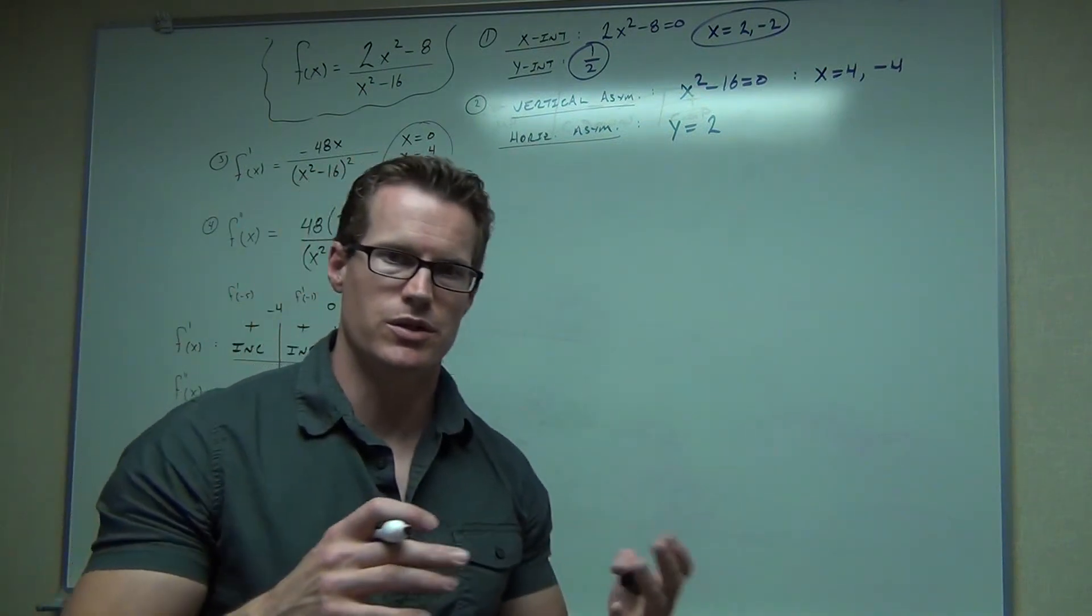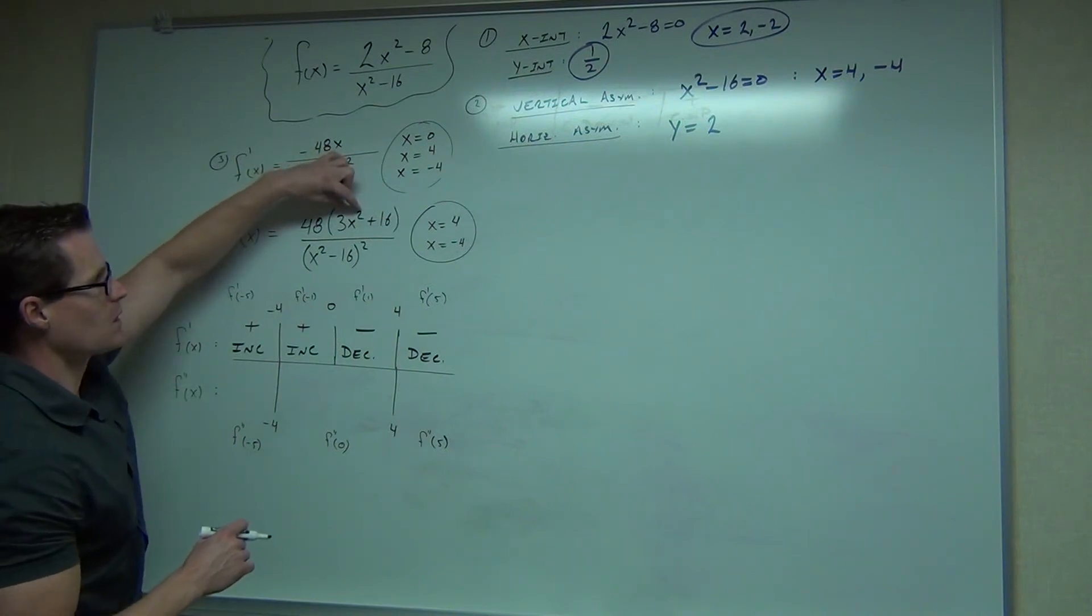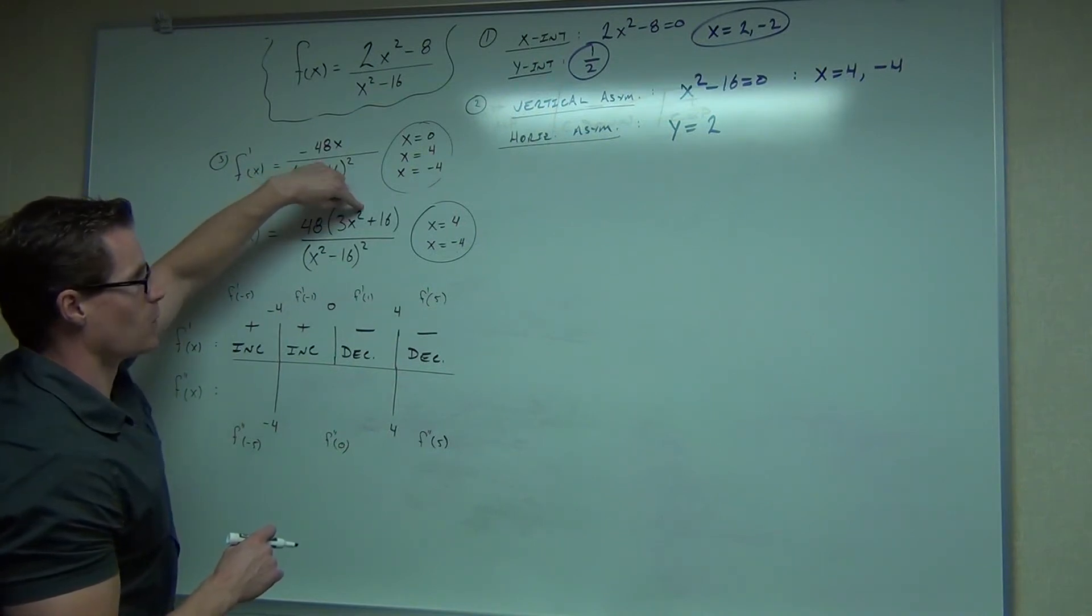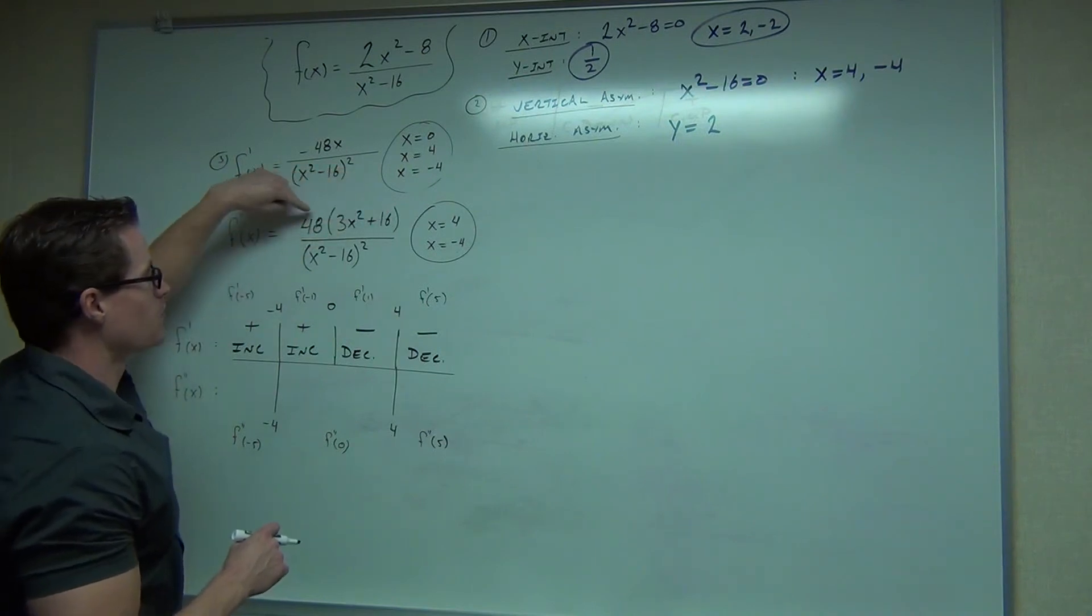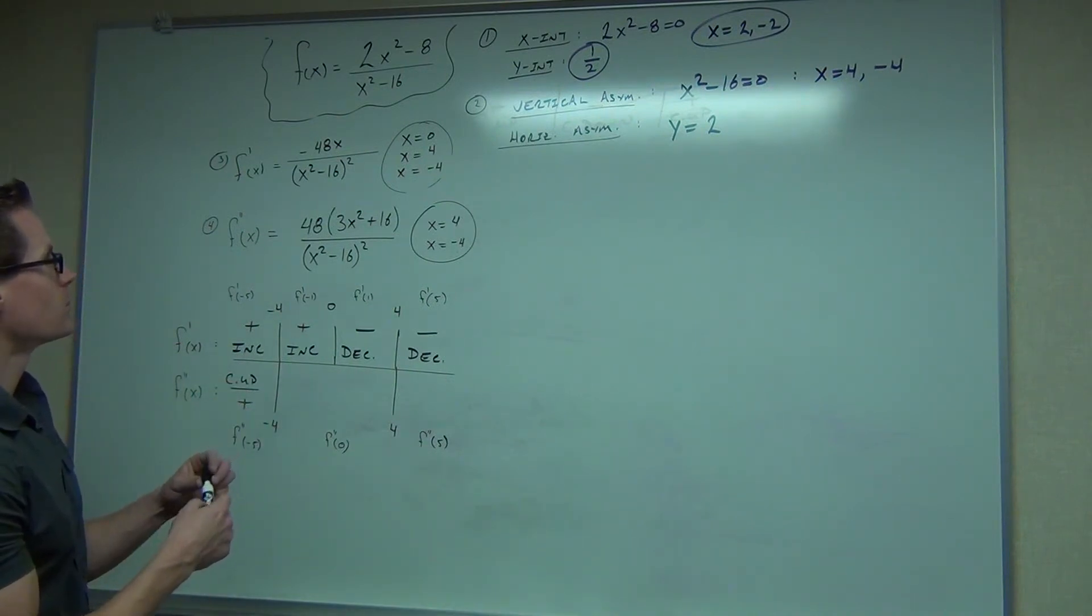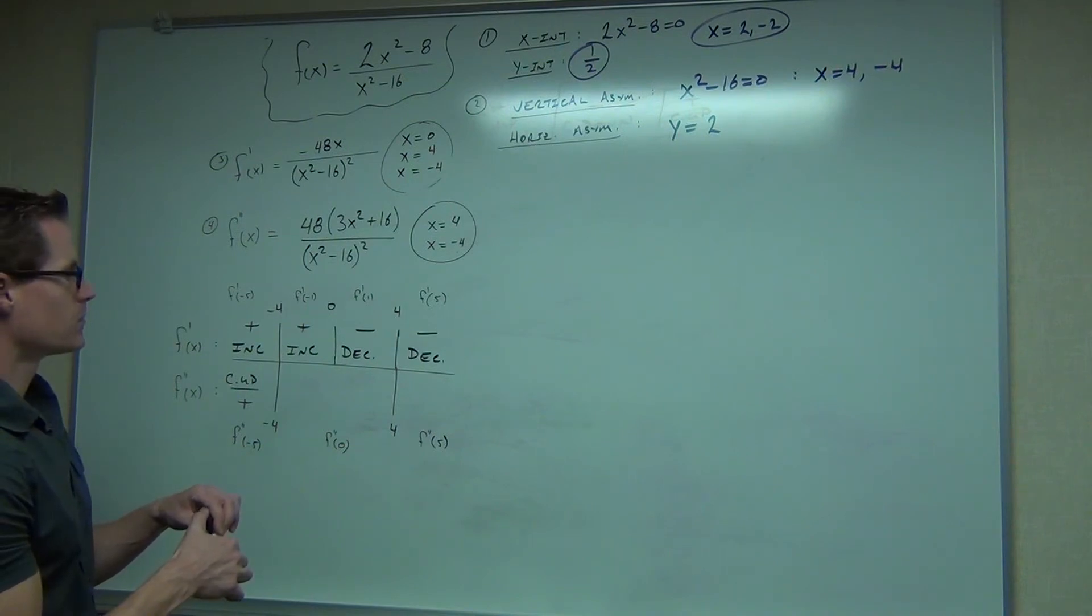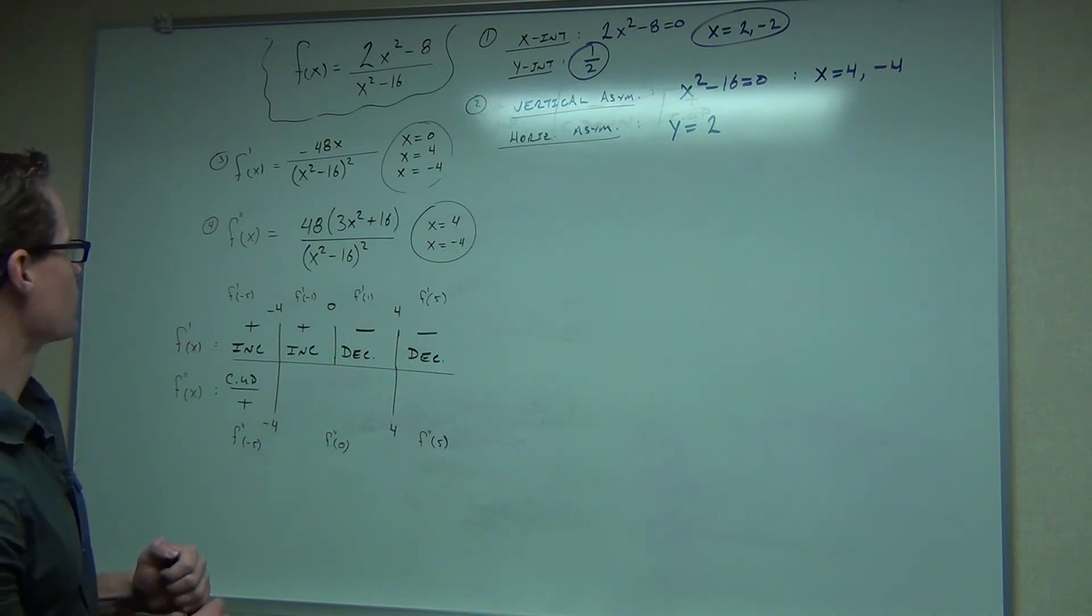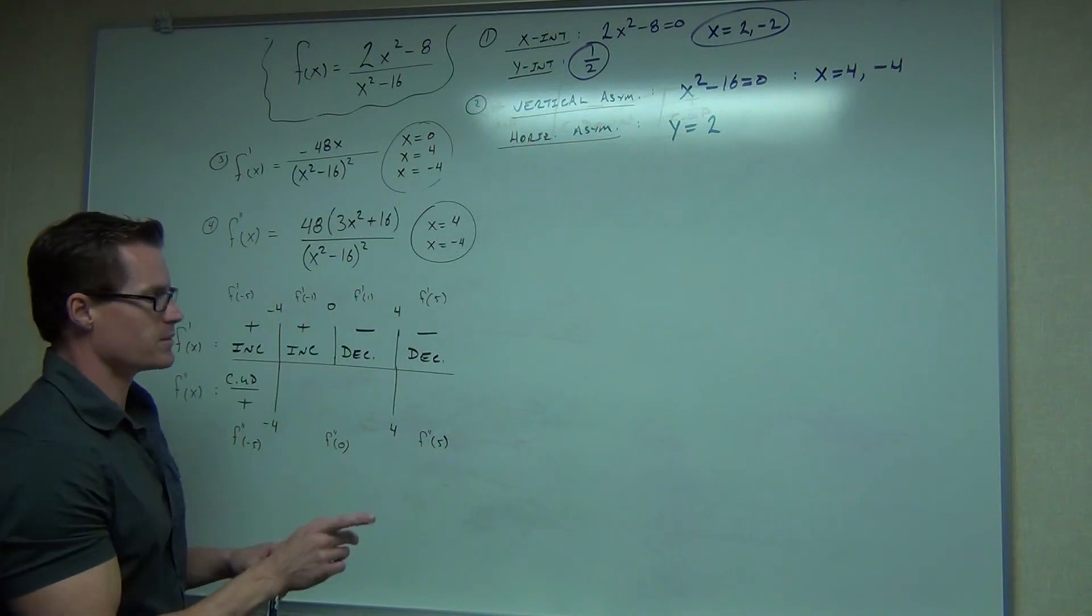It will say plug in negative 5, but now do it to the second derivative. Second derivative is right here. This is, well, let's see. Negative 5 squared. Well, that's going to be positive. Plus positive. Positive. Oh, that's positive. Oh, you know what? I made a mistake. I think I drew that wrong.